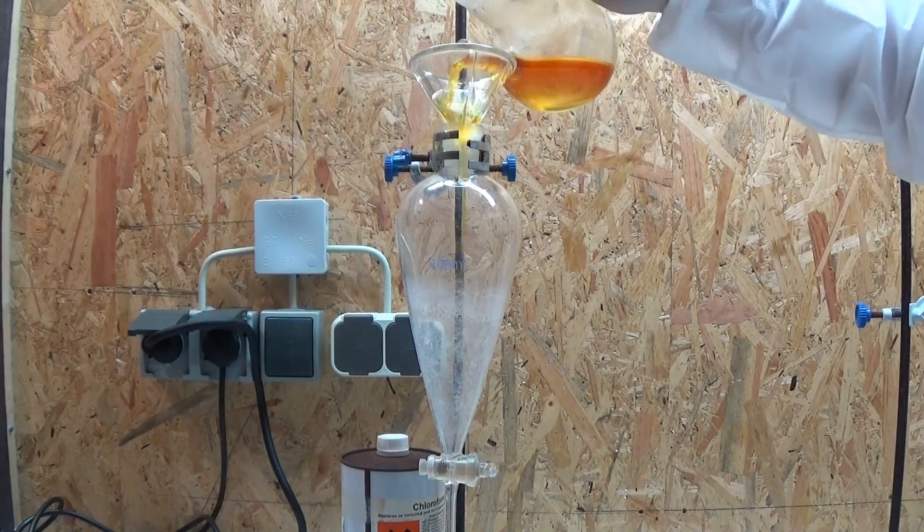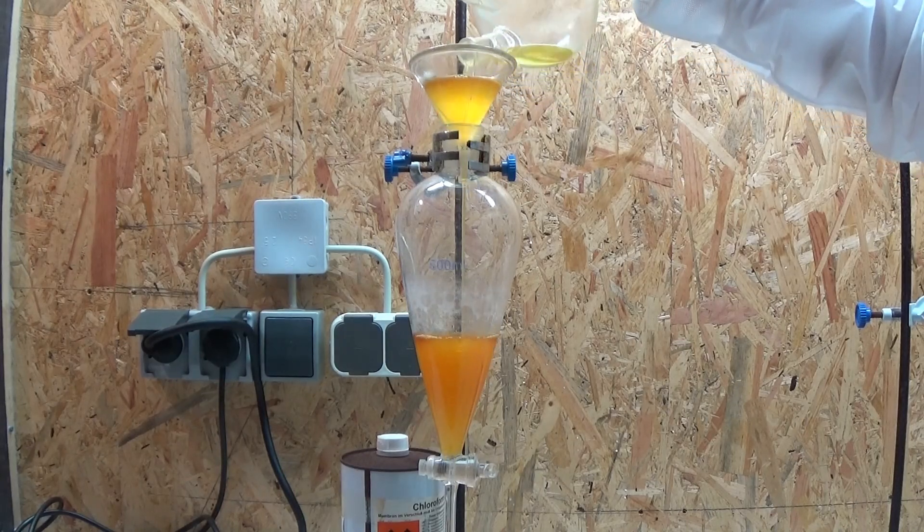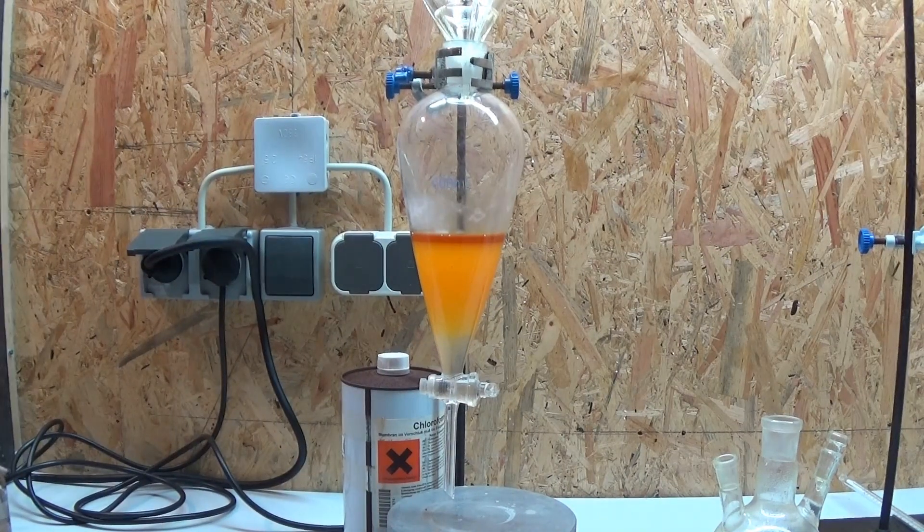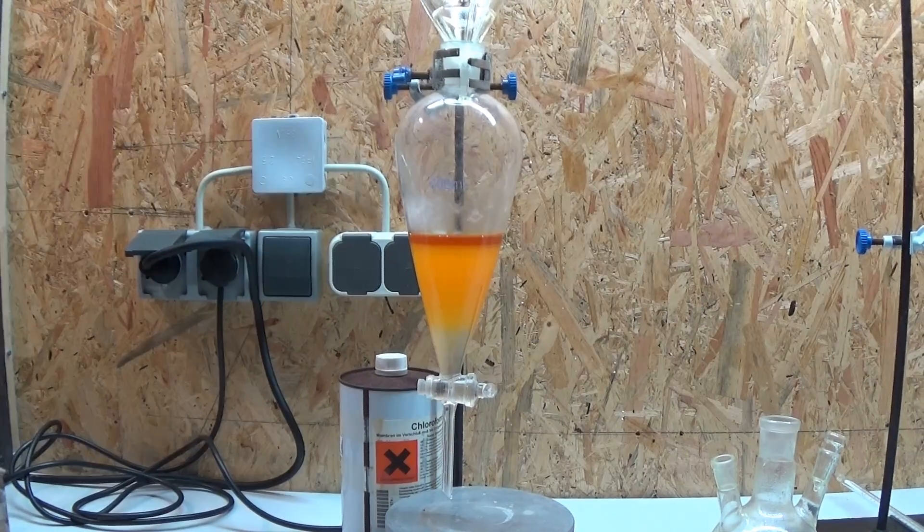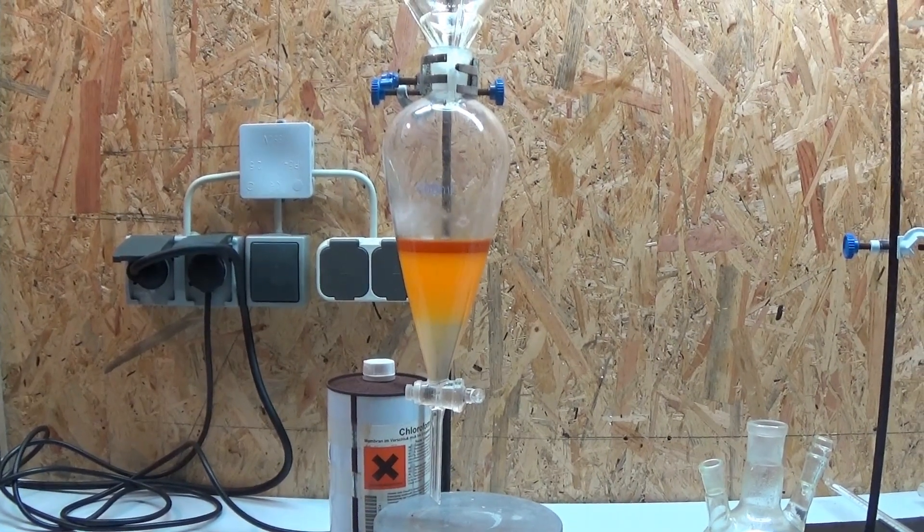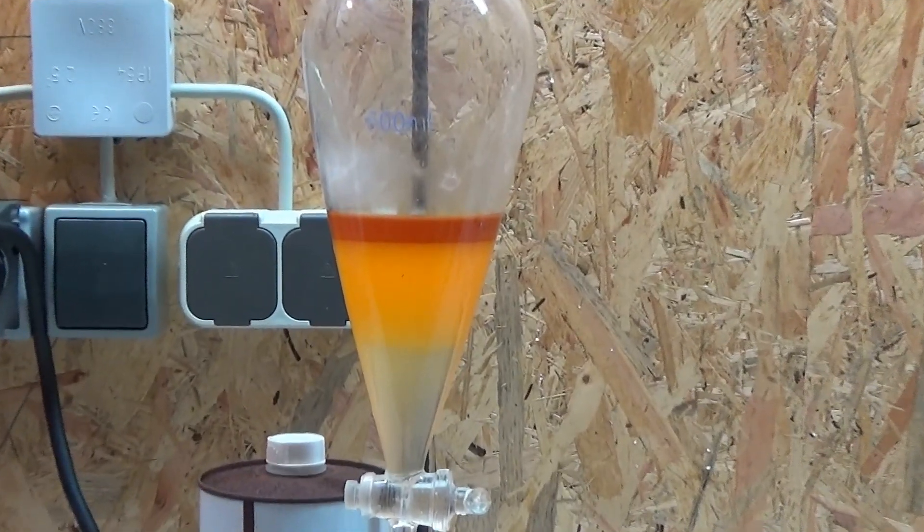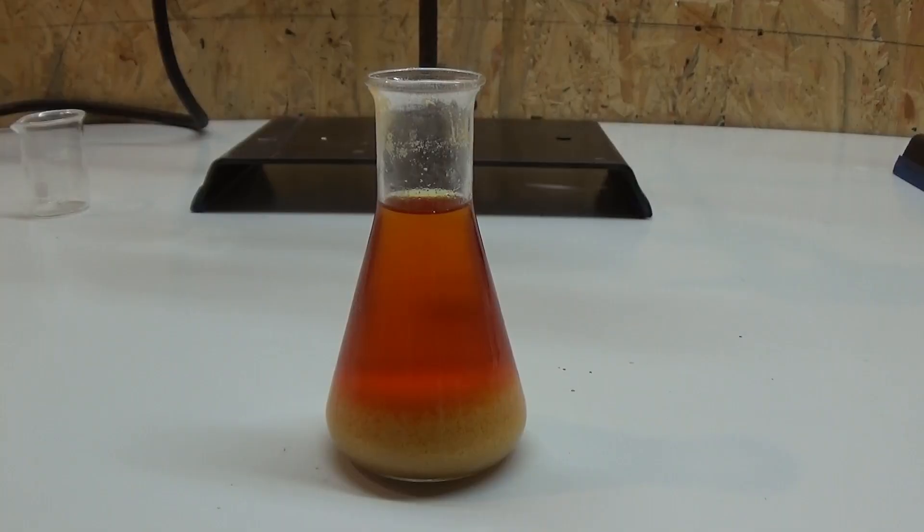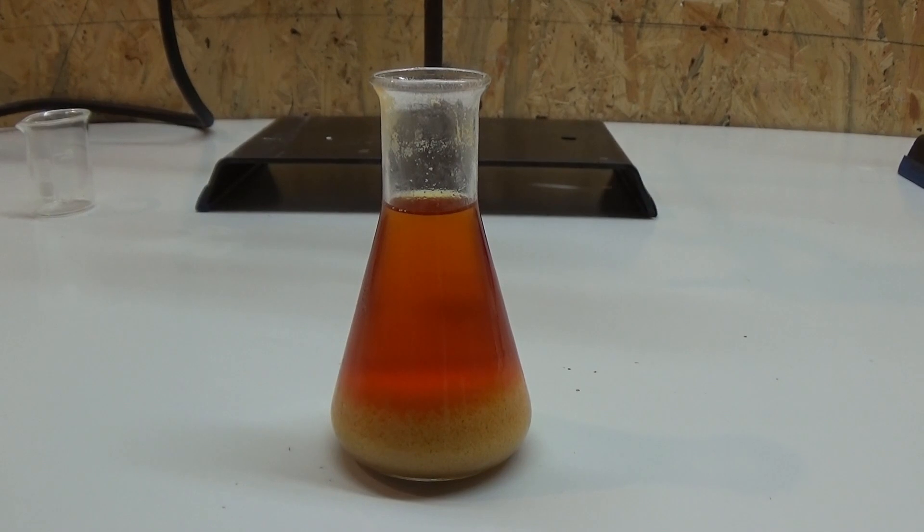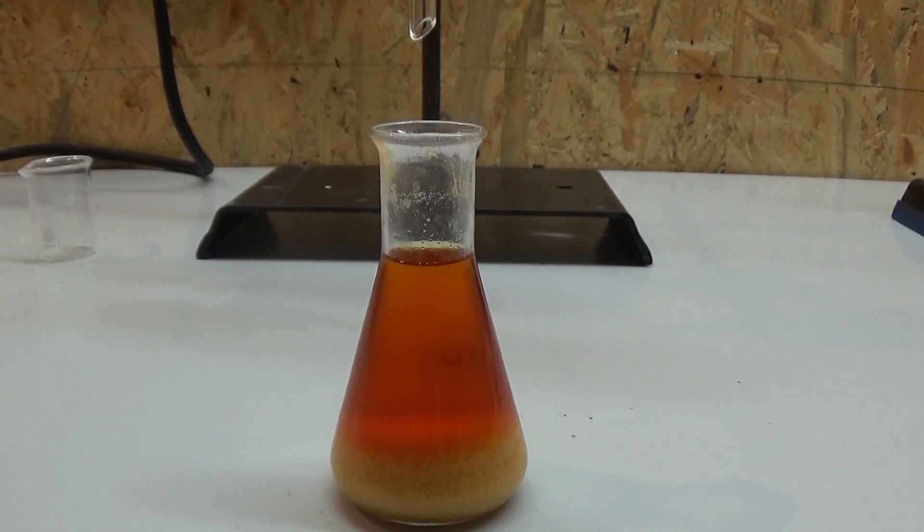The upper organic layer is separated and put aside while the water layer is extracted twice with 20 milliliters of ethyl acetate. The combined organic layers are then dried using sodium carbonate. Note sodium carbonate is not a very good choice for this purpose, magnesium sulfate is the better drying agent. The further purification and the hydrolysis of the ethyl ester to get the desired cinnamic acid will be done in the next video. Until then have fun and do not kill yourself.